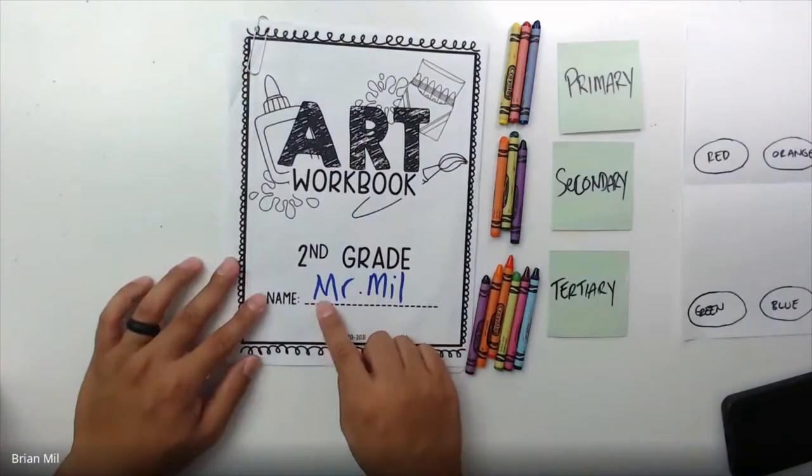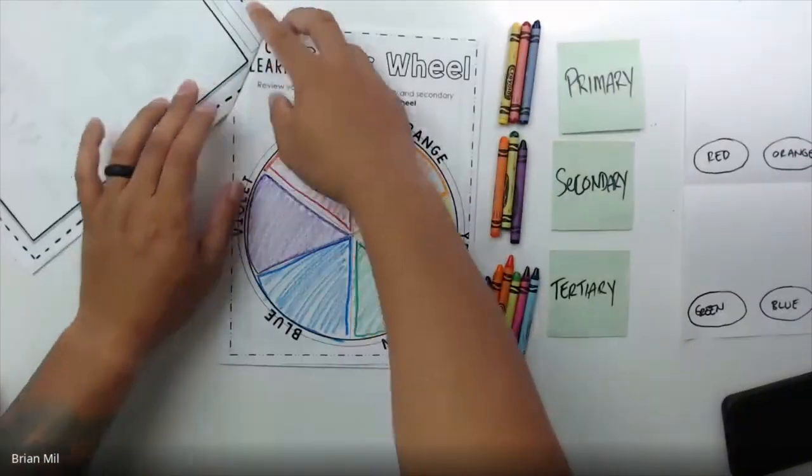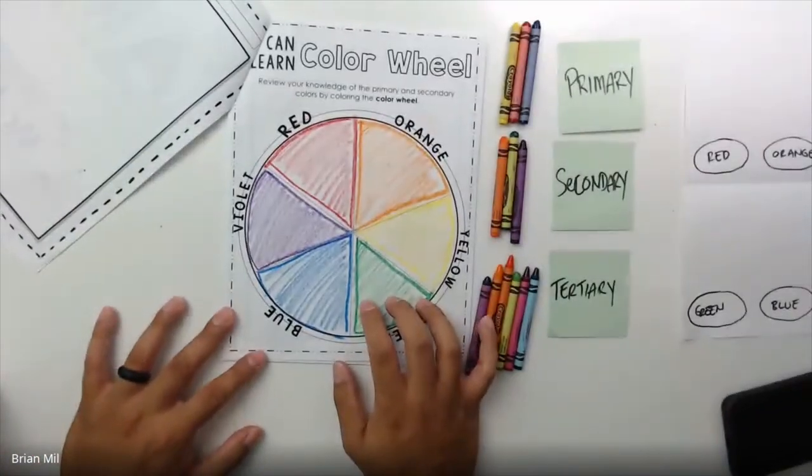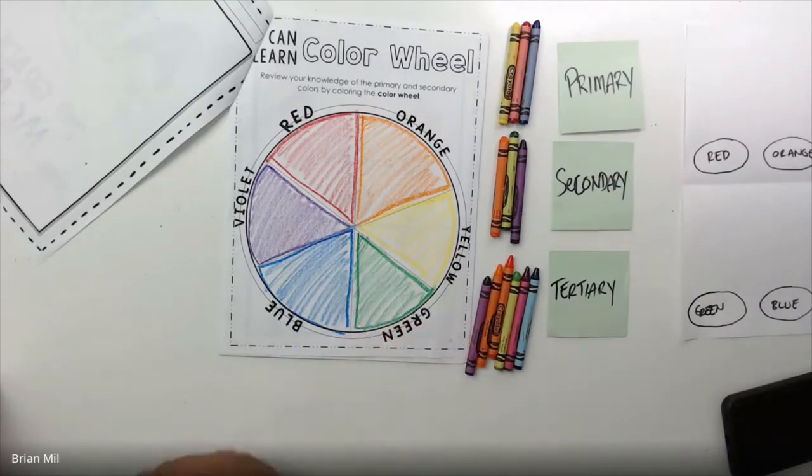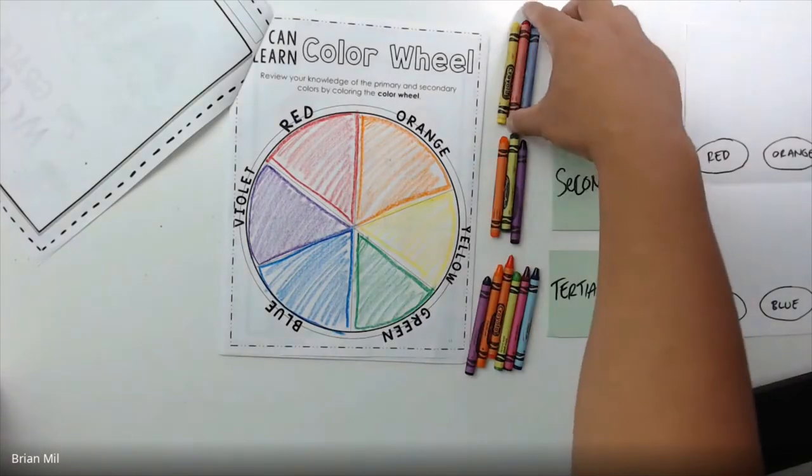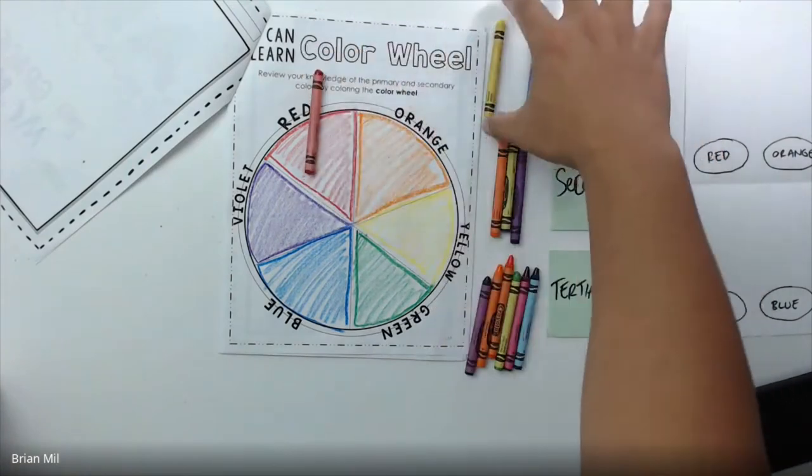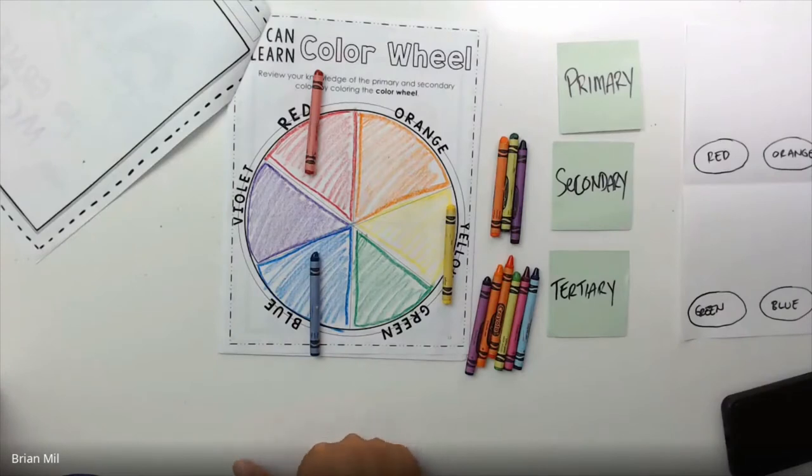So what we did last week was we wrote our names on the front of the packet, we open it up. We went over six colors on the color wheel. Now this is not a complete color wheel because there are many other colors in the color wheel. But for us, we learned about the following. We learned about the primary colors and secondary colors. So we added red, we added yellow, then we added blue. Those are the primary colors. Who could tell me, what is red plus yellow? Raise your hand.